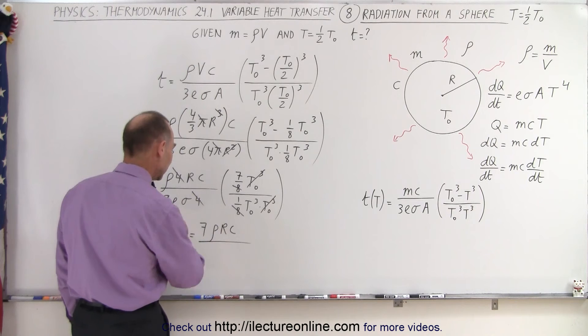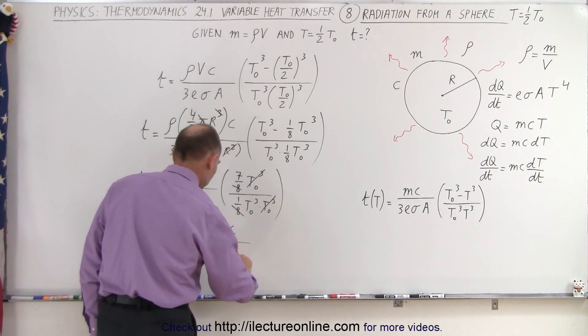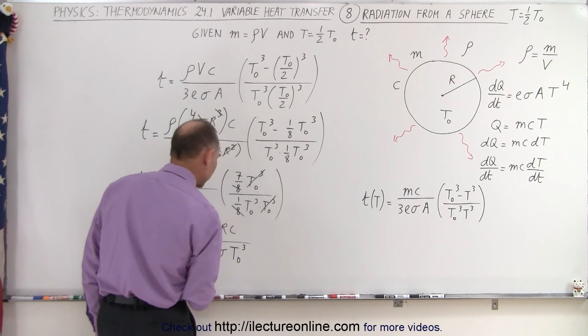Divided by, in this case, we're going to have 9Eσ, and then the T sub-naught cubed goes in the denominator. There we go.